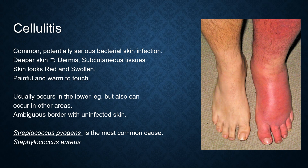Cellulitis is a common, potentially serious bacterial skin infection. It affects the deeper skin layers, including the dermis and subcutaneous tissues. The skin looks red and swollen; it is painful and warm to touch. It usually occurs in the lower leg, but can also occur in other areas. It has an ambiguous border with uninfected skin.